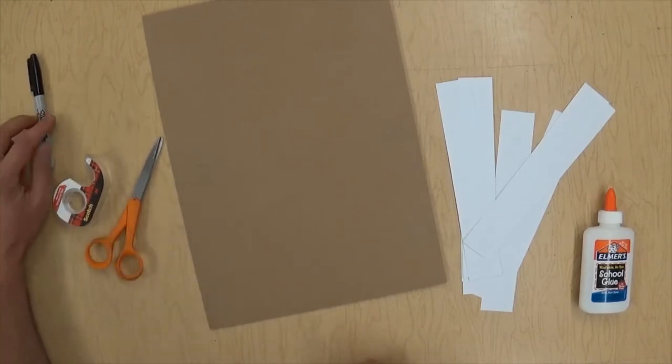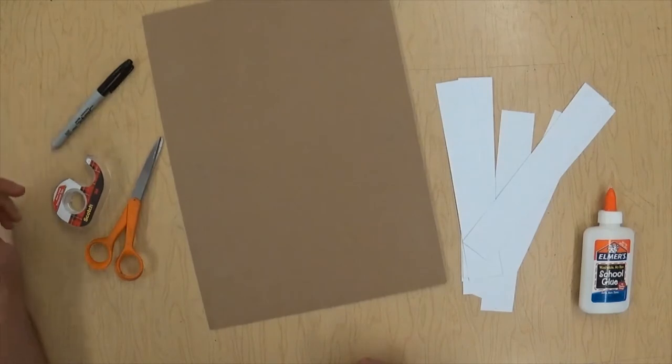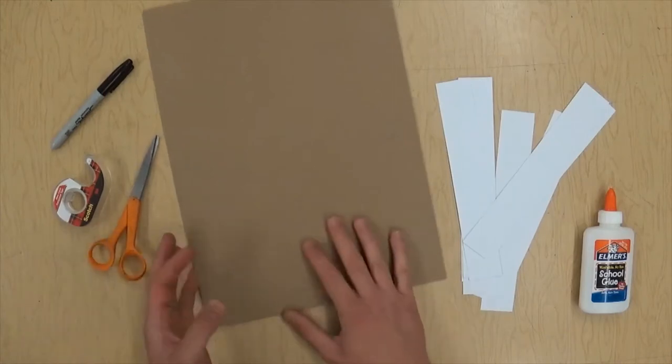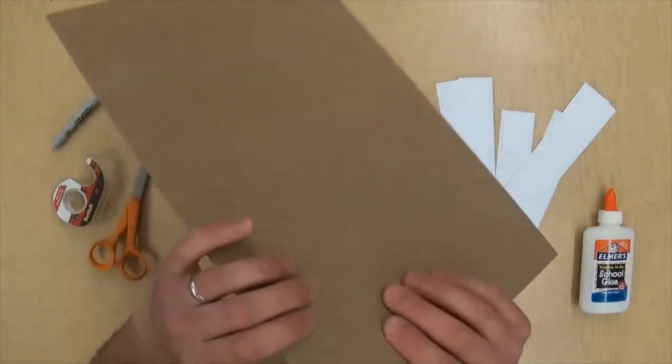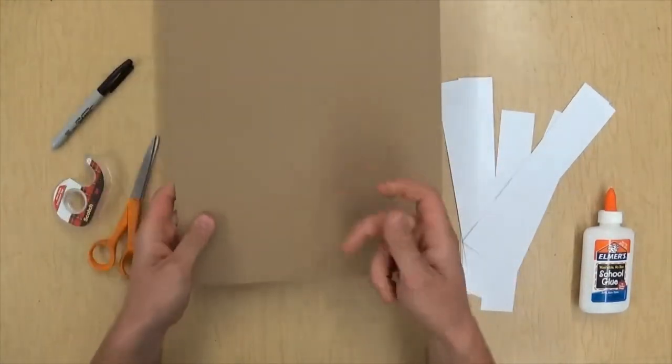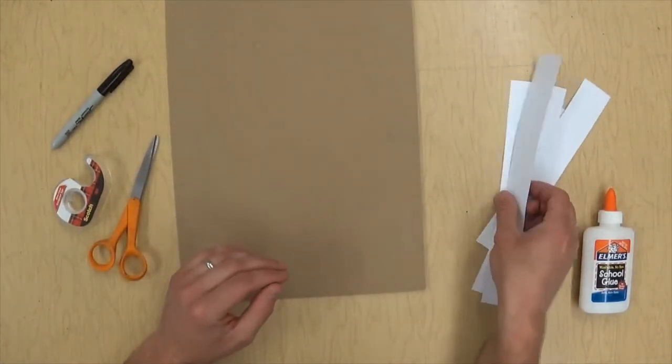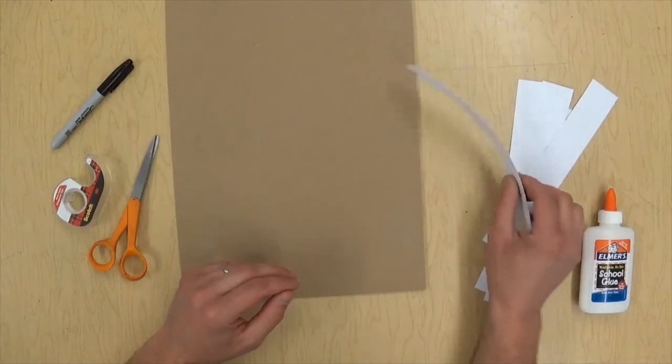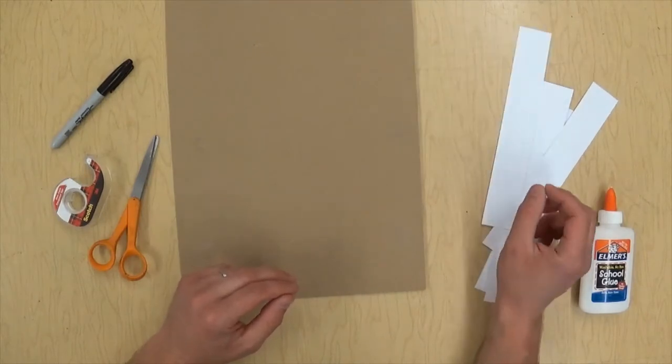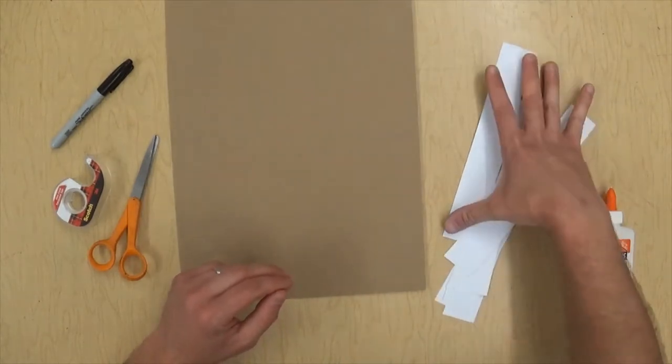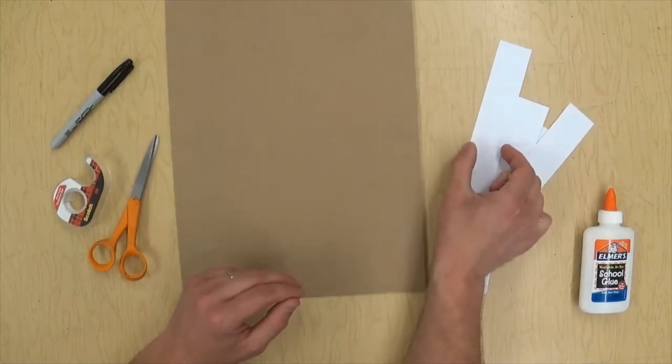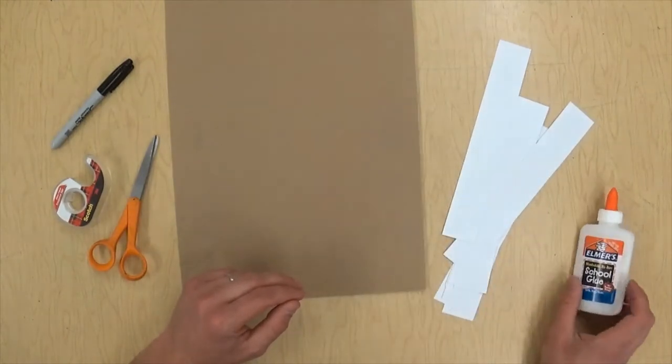So I've got something to draw with, doesn't matter what. I've got some tape, doesn't matter what kind of tape. I've got scissors, I've got light cardboard that I can cut. You need to be able to cut this with scissors kind of easily. And then I've got strips of paper, and this is a little bit thicker paper so it's kind of strong. It doesn't matter how long the paper is, but they all need to be the same width, and you'll see why in a little bit. And I've got some white glue.